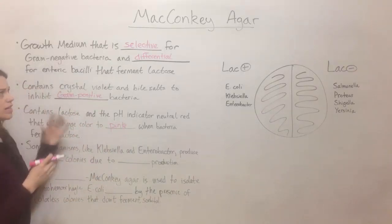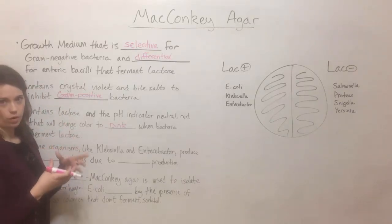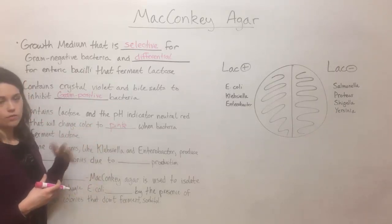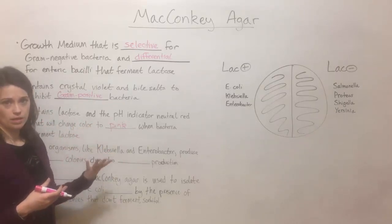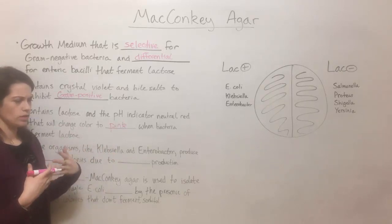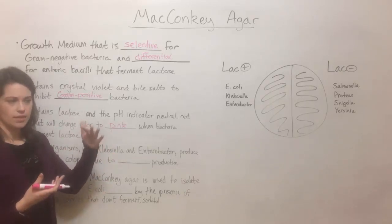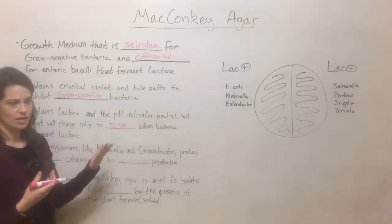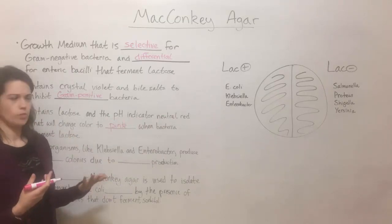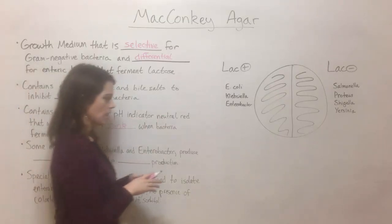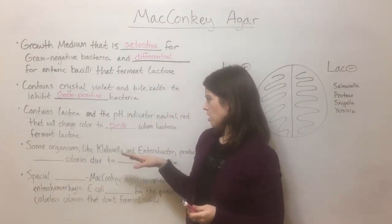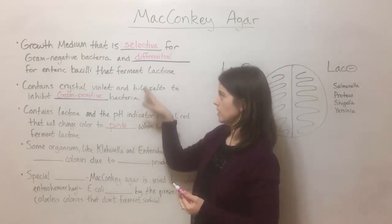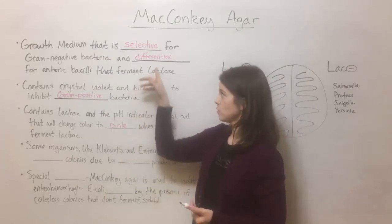The media, when it's just a sterile MacConkey agar plate with nothing growing on it, is a yellowish color, but it contains lactose. If you put bacteria on it, they can ferment the lactose, which produces an acid byproduct. The acid lowers the pH, and that causes the neutral red to change to a pink color, showing you that lactose fermentation is happening. That's how you're able to distinguish between the non-fermenters and the fermenters — that's what makes it differential.